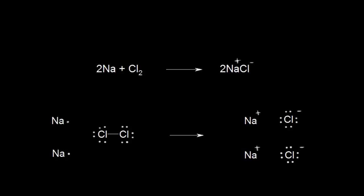Let's see how to identify the oxidizing and reducing agents in a redox reaction. Here we're forming sodium chloride from sodium metal and chlorine gas. Before you assign oxidizing and reducing agents, you need to assign oxidation states. Starting with sodium: sodium atoms are in their elemental form, and therefore have an oxidation state equal to zero.